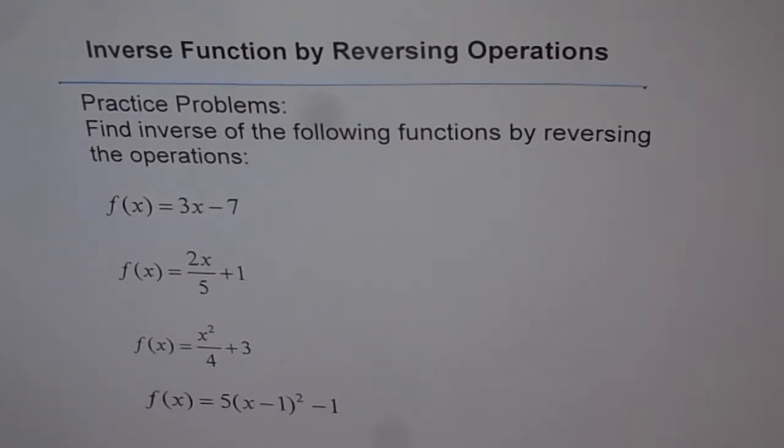Find inverse of the following functions by reversing the operation. The first one is f of x equals 3x minus 7. Then we have f of x equals 2x over 5 plus 1. f of x equals x squared divided by 4 plus 3.